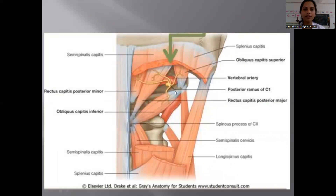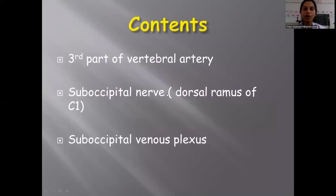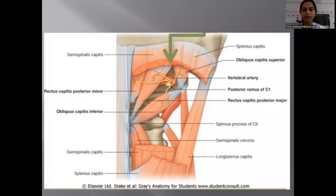You can see the contents of the triangle: there is a part of the vertebral artery and a nerve which divides into different branches to supply the muscles. The contents are the third part of the vertebral artery, the suboccipital nerve which is the dorsal ramus of C1, and the suboccipital venous plexus.